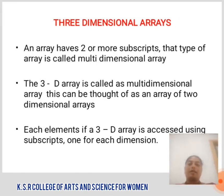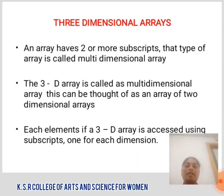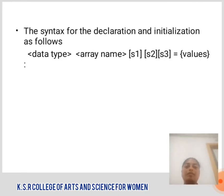3-Dimensional Array: A 3-Dimensional Array has two or more subscripts; this type of array is called a multidimensional Array. The 3-D Array is called the multidimensional Array and can be thought of as an array of two-dimensional Arrays. Each element of the 3-D Array is accessed using subscripts, one for each dimension. The syntax for declaration and initialization is as follows: data_type array_name[size1][size2][size3] = {values}.